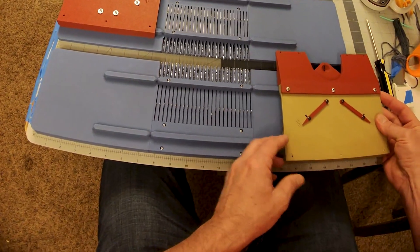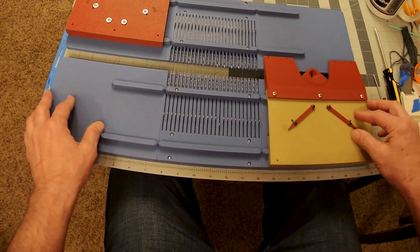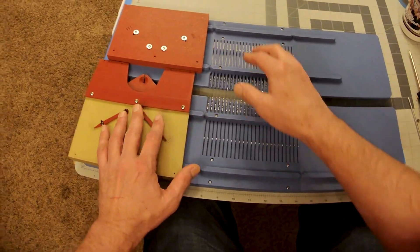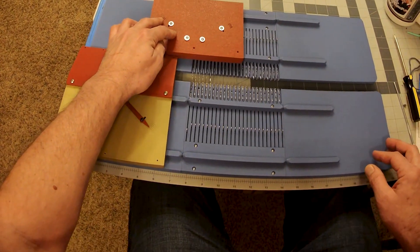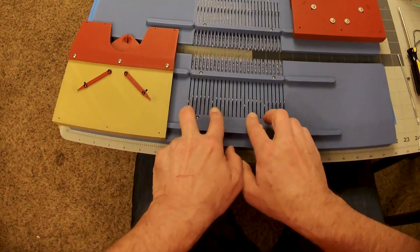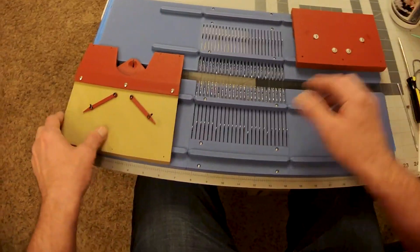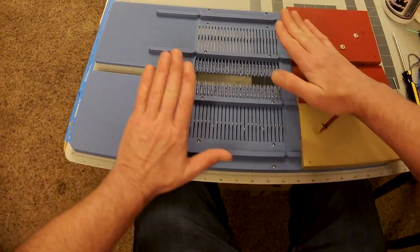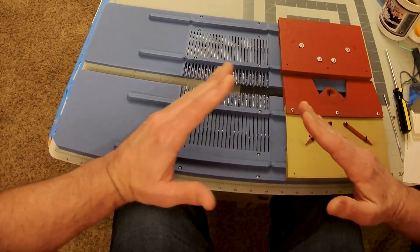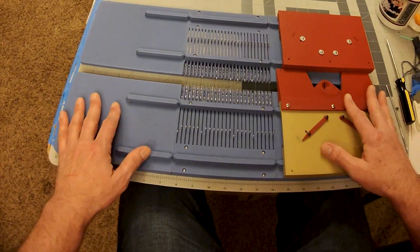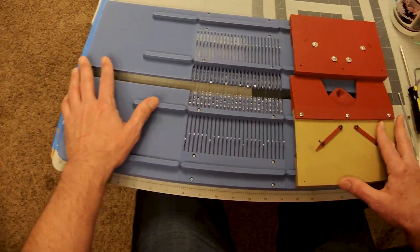One thing you might notice when I move the carriage across here is that some of these needles are actually hitting each other. See, some of these needles moved. So once I get a double bed system set up, these beds are going to actually be tilted at an angle, so it's going to be knitting like this.